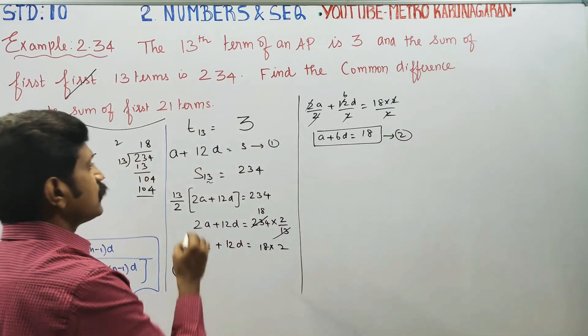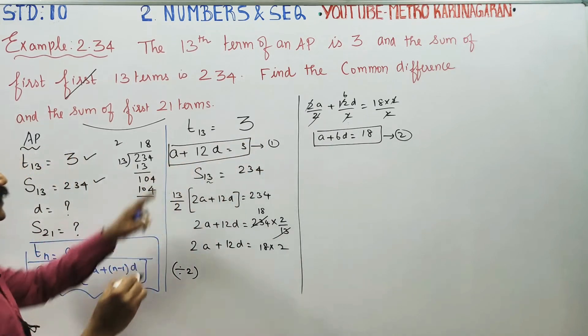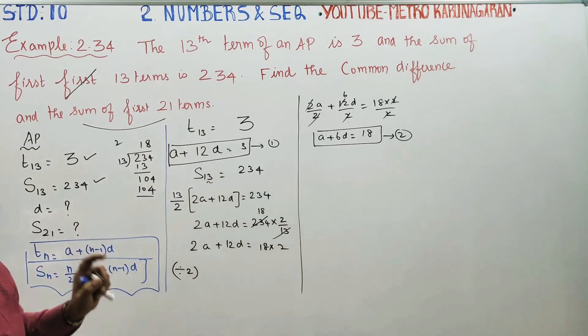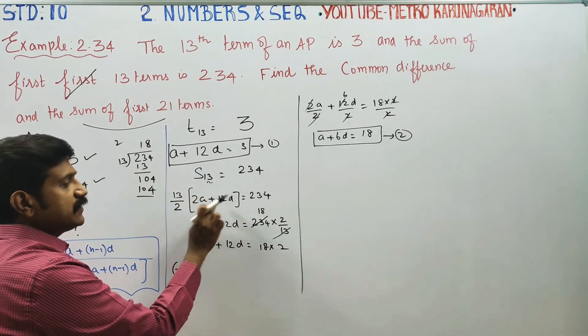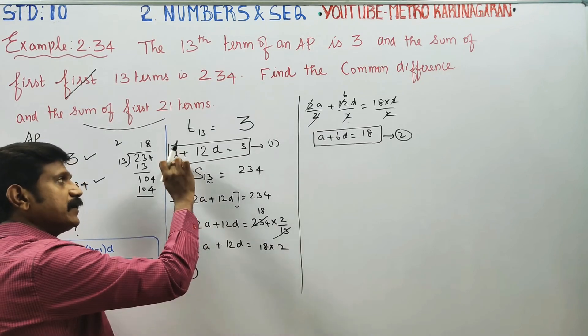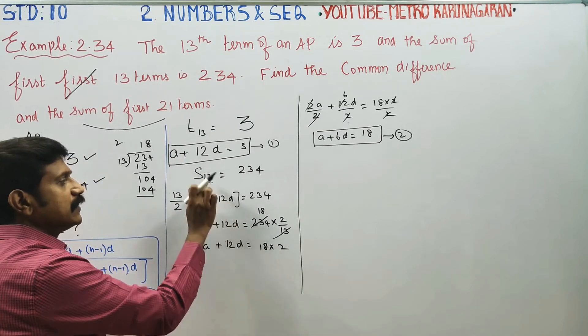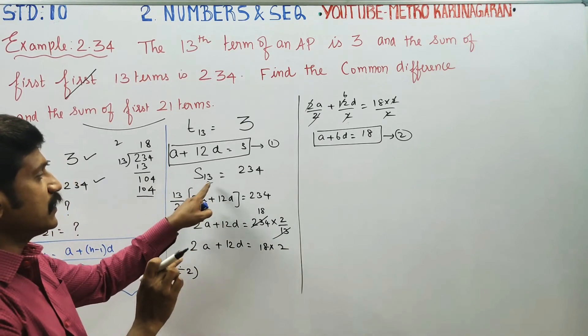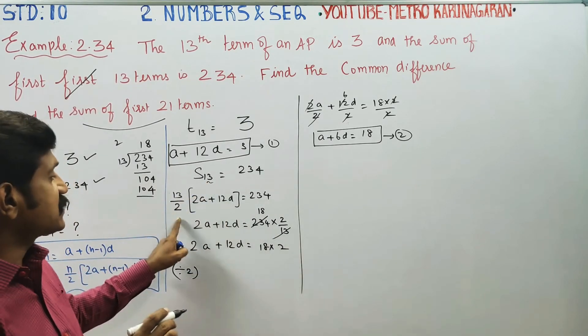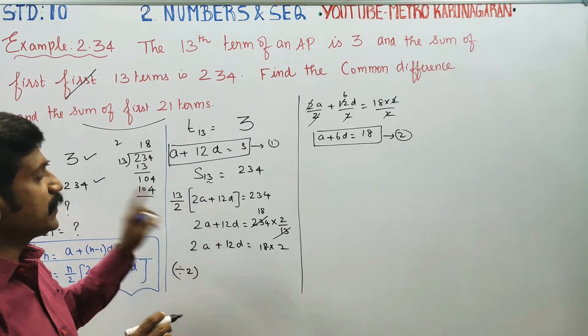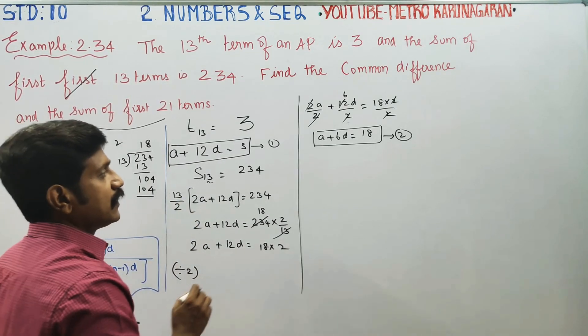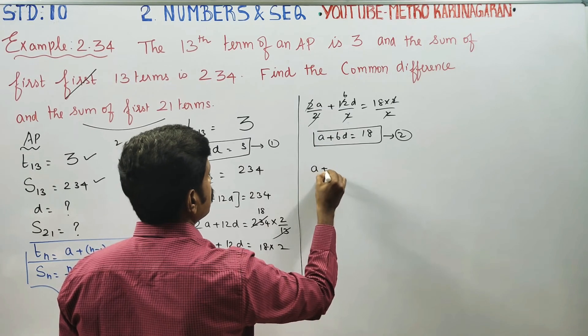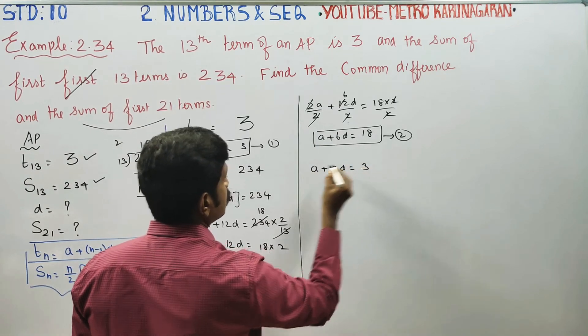The first equation is A plus 12D equals 3. The second equation is A plus 6D equals 18. Now we solve using the elimination method from 8th and 9th standard.